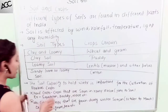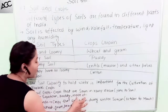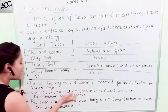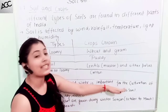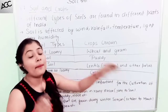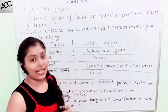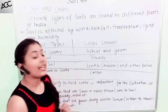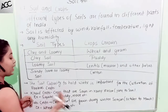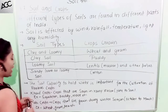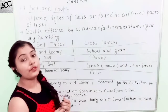Examples of Kharif crops include soya bean, paddy, and maize. Soya bean, paddy, and maize are all grown in the rainy season. So, what do we call soya bean or maize? These are all called Kharif crops.